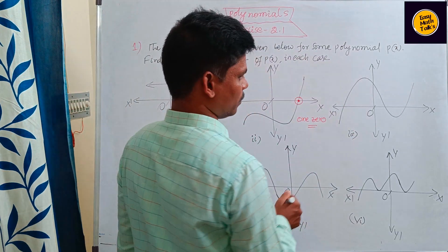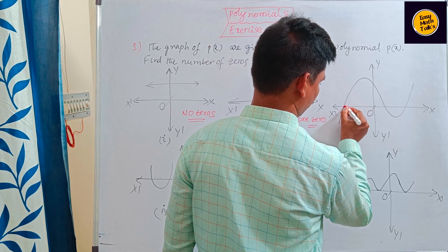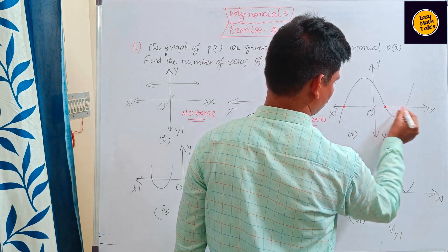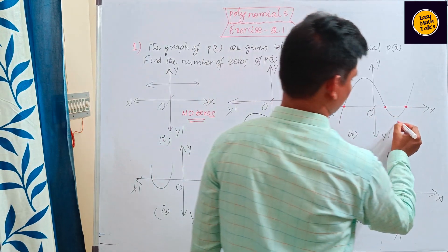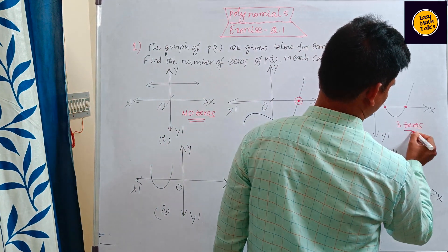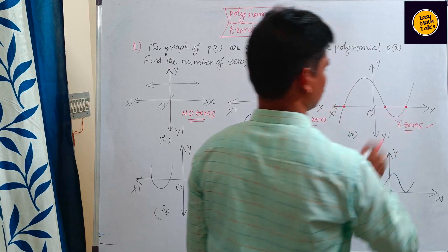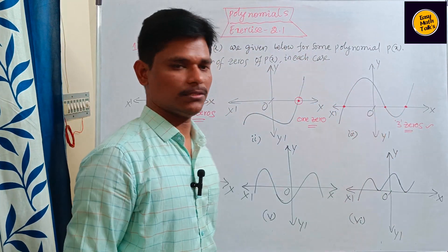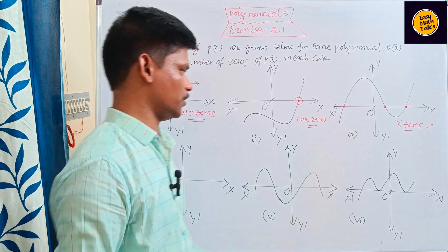Here the line touches the x-axis at three zeros: one, two, three. How many zeros? Three zeros. This polynomial touches or intersects the x-axis at three zeros.